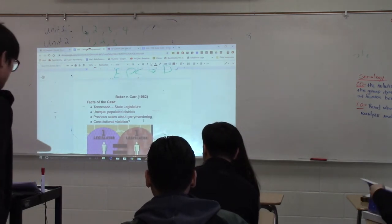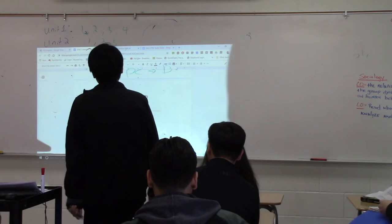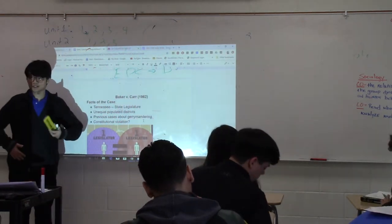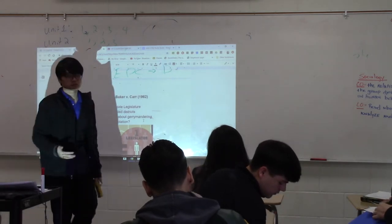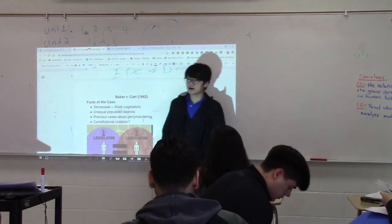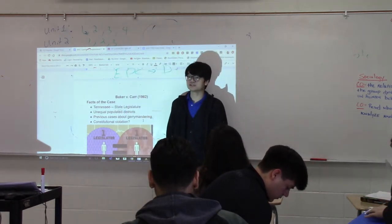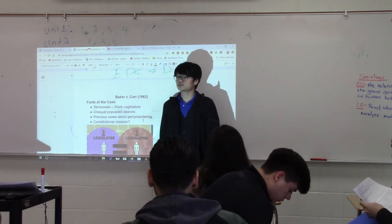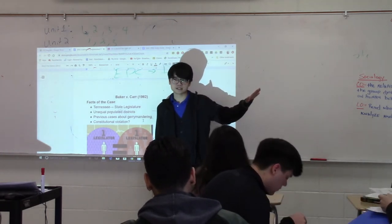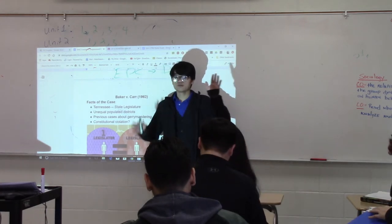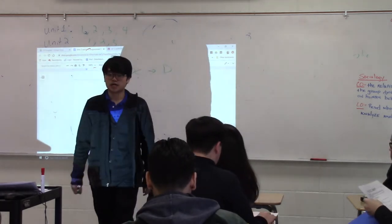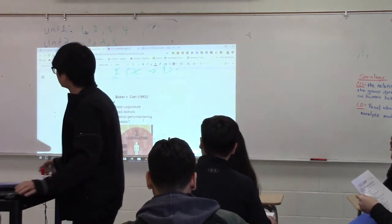These are required cases in AP Government, just like McCulloch v. Maryland and U.S. v. Lopez. You're going to need to know the facts behind them and what the Supreme Court decided. Our first case is Baker v. Carr. The state of Tennessee has not redistricted — has not redrawn the lines for their state legislature — in a while. Not for the U.S. House of Representatives, but for their own state legislature. They have not redistricted in a while.